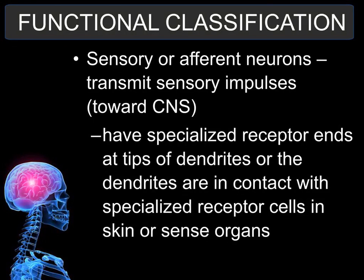The other classification is the functional classification, based on which direction information is traveling down the neuron. Sensory or afferent neurons send information toward the central nervous system, which is the brain and the spinal cord. They have receptors throughout the body and sense changes in the environment. The tips of the dendrites receive that information and send it to the brain and spinal cord to convey what is going on in the body.